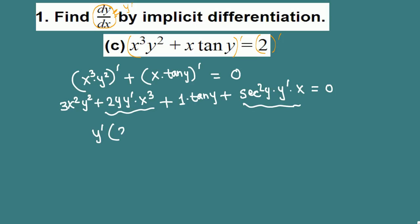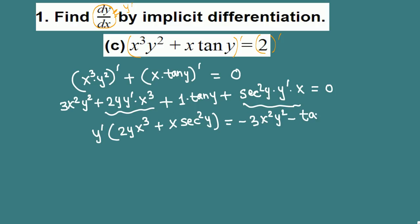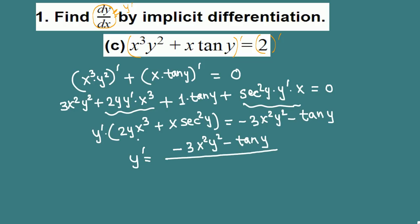Factoring y prime out gives y prime times (2y x cubed plus x secant squared y) equals negative 3x squared y squared minus tangent y. Dividing both sides by that factor, y prime — which is dy over dx — equals negative 3x squared y squared minus tangent y, all over 2x cubed y plus x secant squared y.